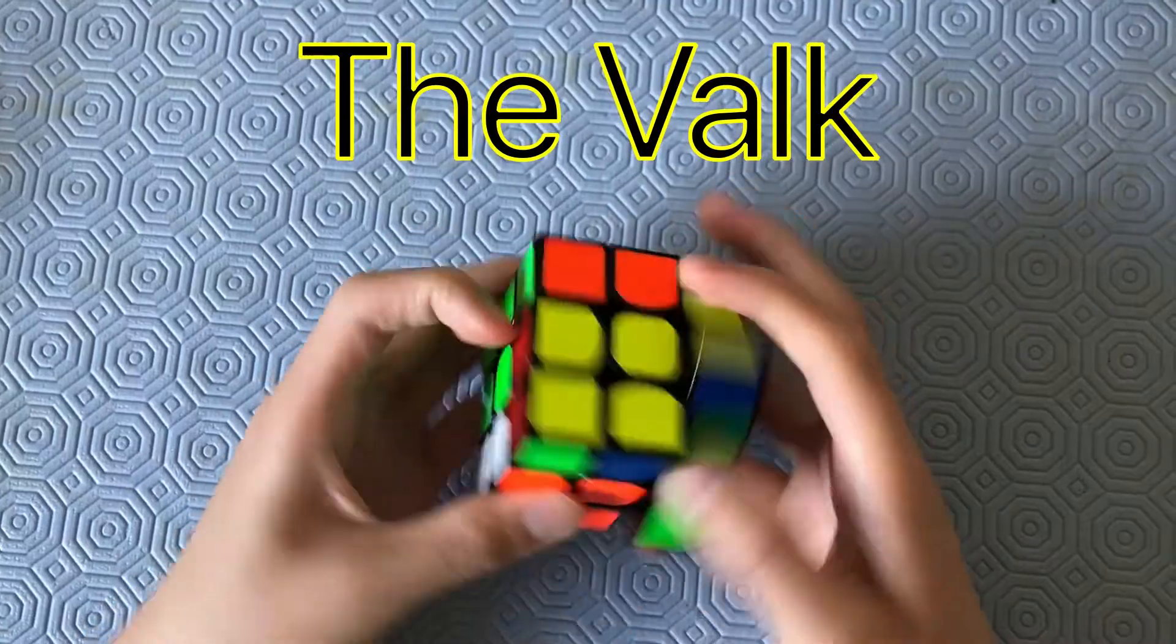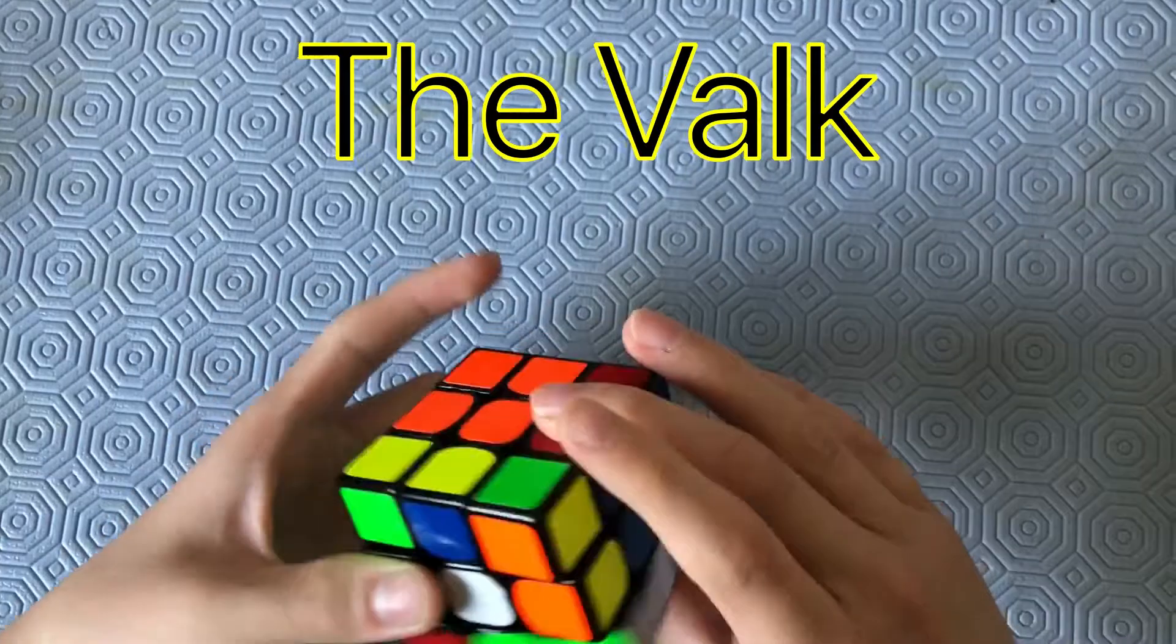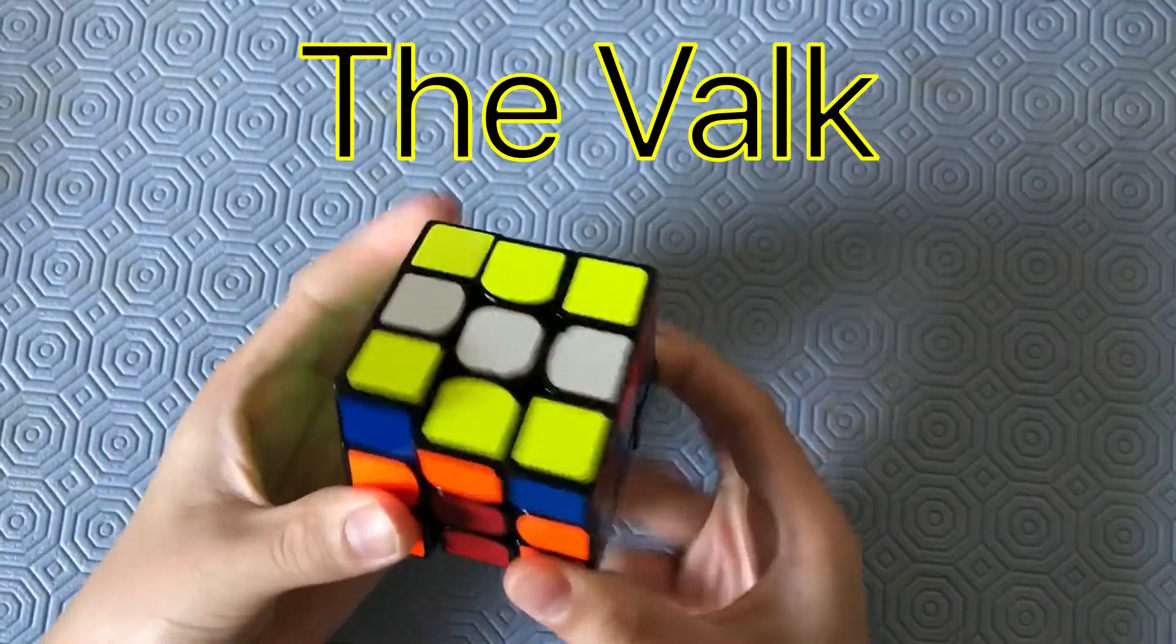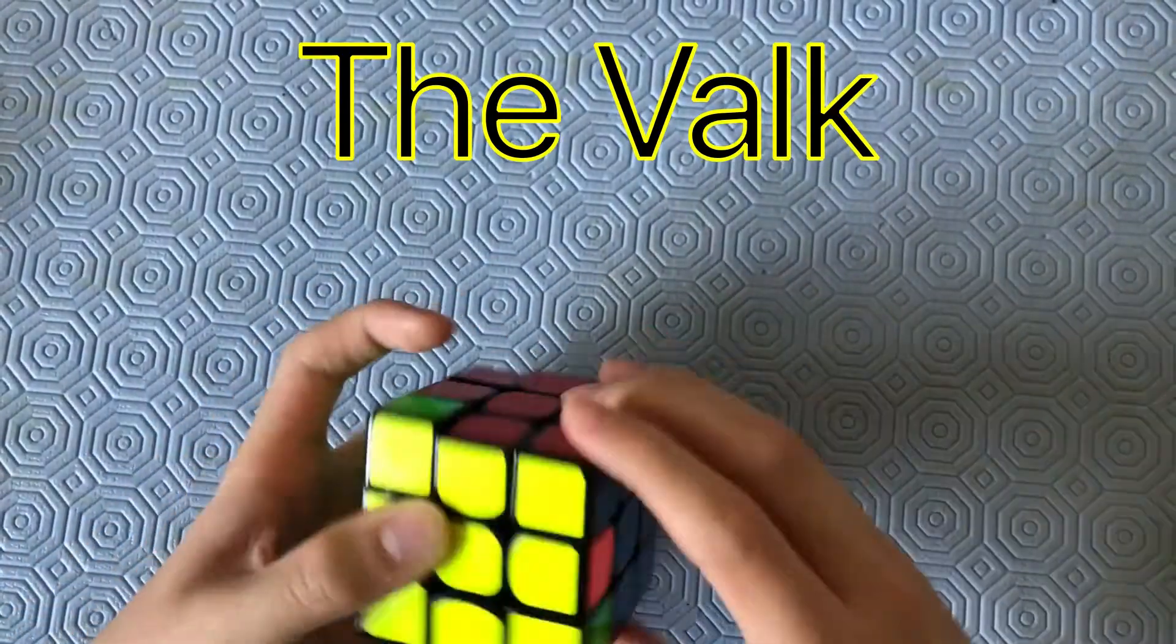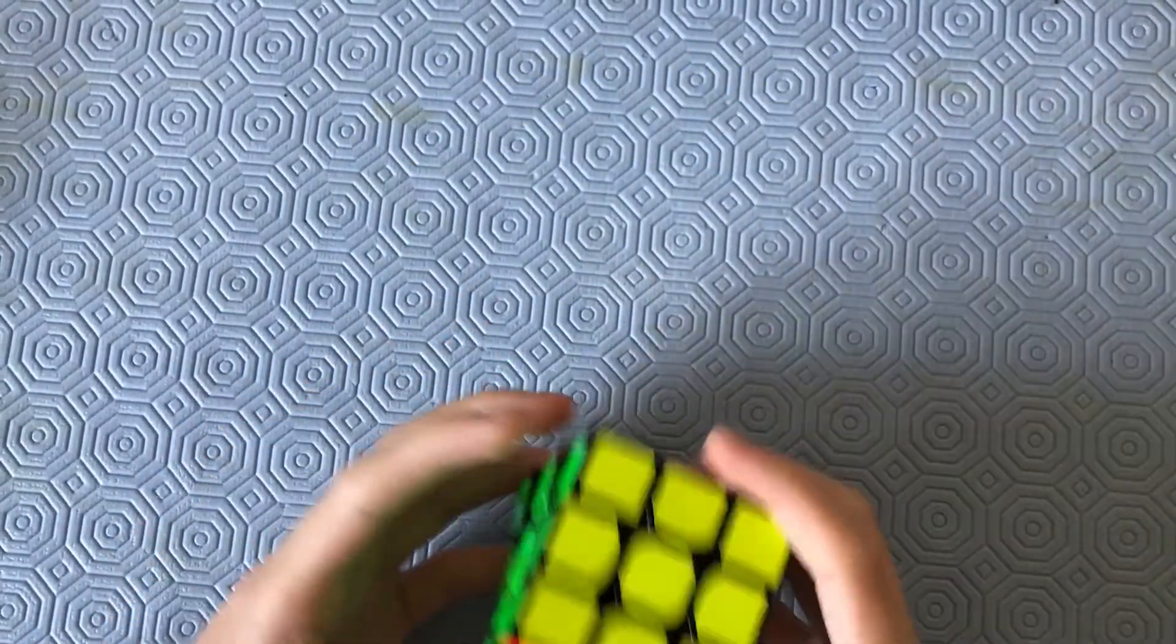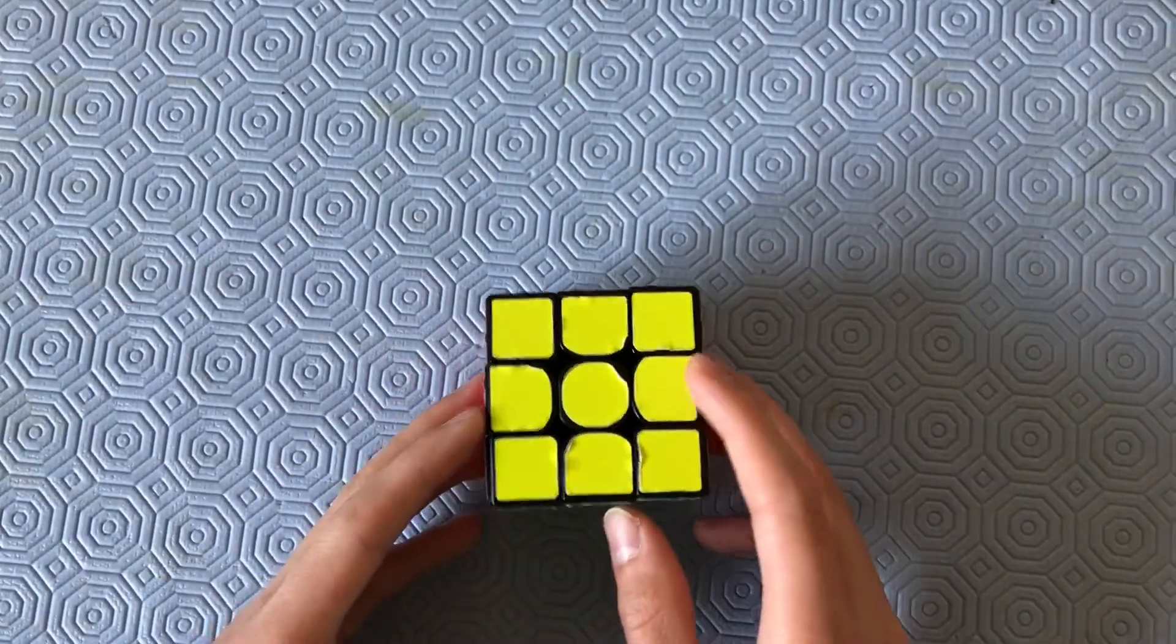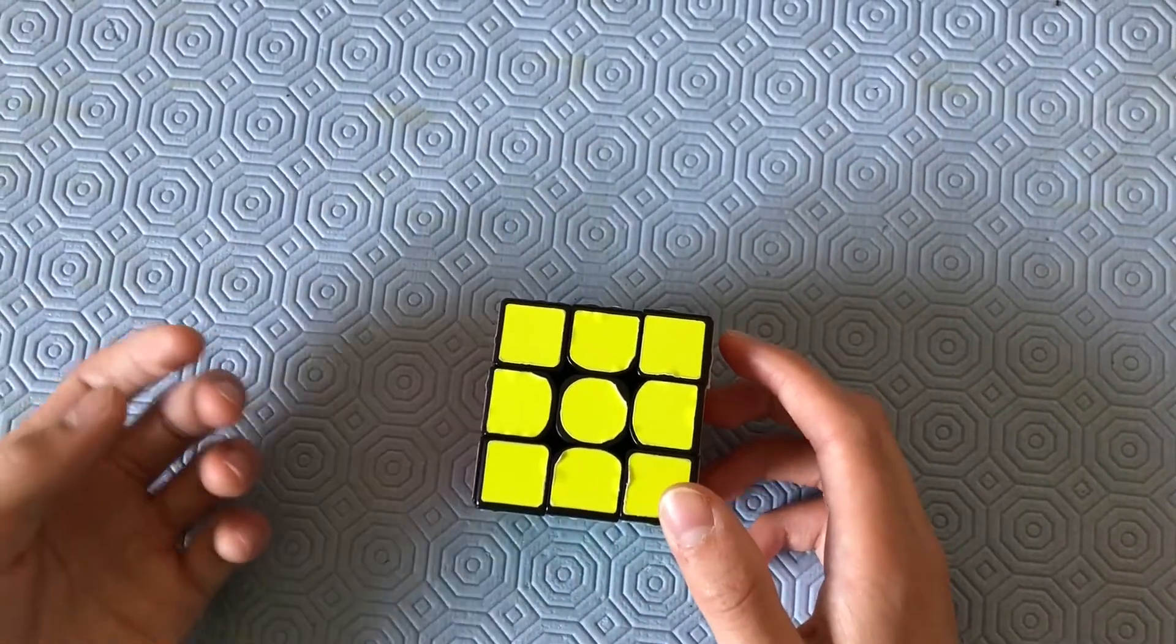The Valkyrie is a very smooth cube. It's also very controllable, but not too fast. I can easily execute most of my algorithms on this and I find it a very good choice. If I had to give a cube this category, I would give it to the Yushin Little Magic. I just like the speed of the Yushin Little Magic and it just feels much better than the Valkyrie.